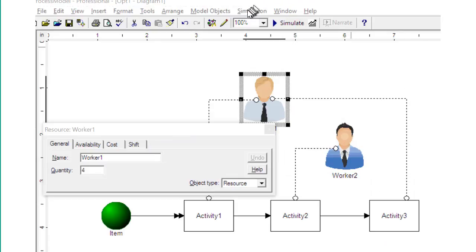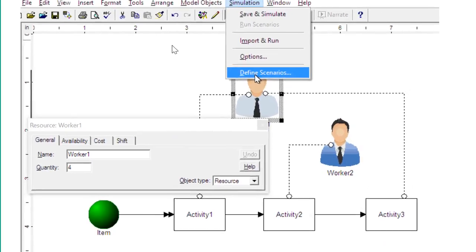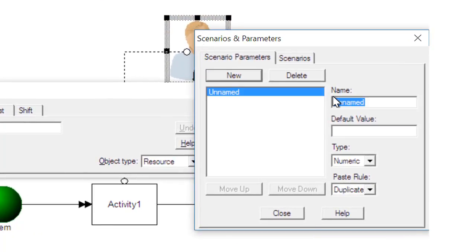Second, create scenario parameters for each of the items to be changed in the model. In this case, two scenario parameters will be used to change the number of workers, one for each type of worker.